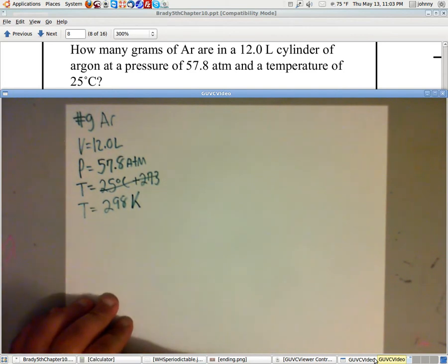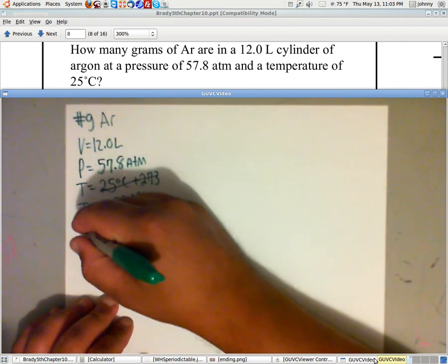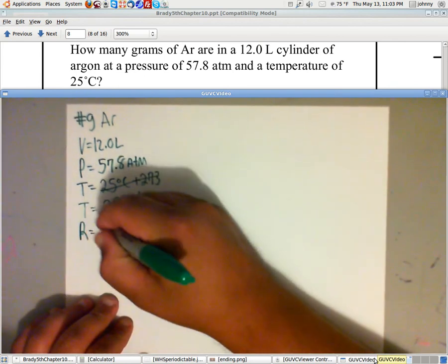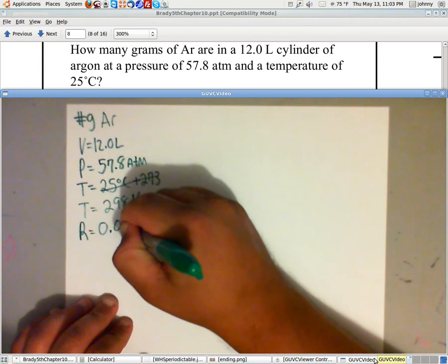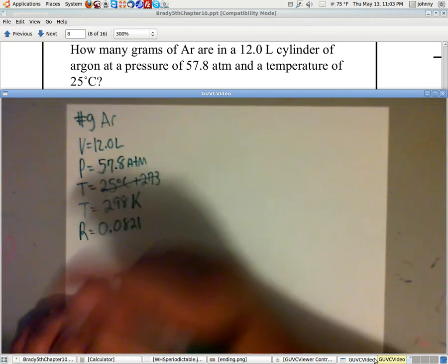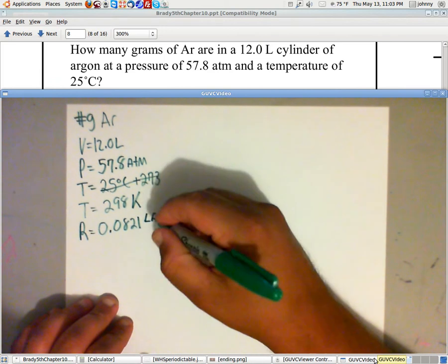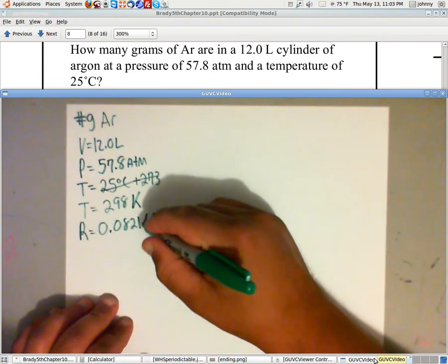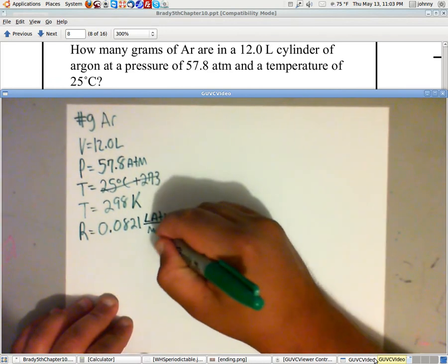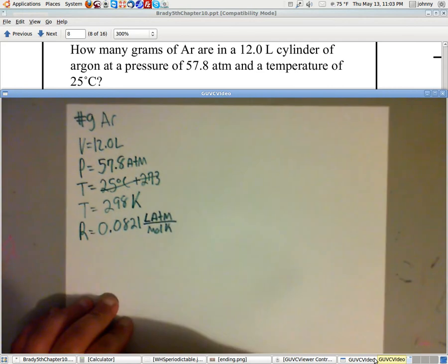Now, the only thing missing is the gas constant. That's right. R equals 0.0821. And the units on that is LATM. Remember, I always say LATM, divided by MOLK, M-O-L-K, which is Moles and Kelvin.